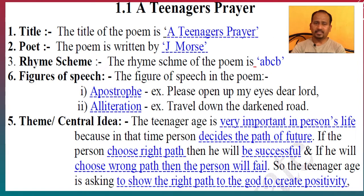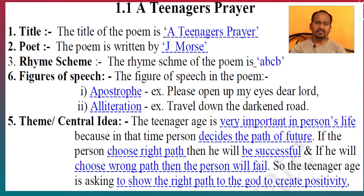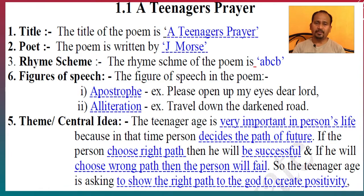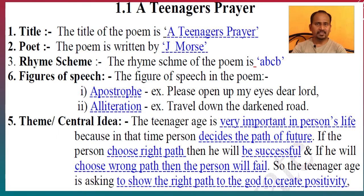Let's see the first poem, that is 1.1 A Teenager's Prayer. The points are: Title — the title of the poem is A Teenager's Prayer. Next point, Poet — the poem is written by J. Morse. Next point, Rhyme Scheme — the rhyme scheme of the poem is ABCB.